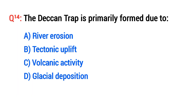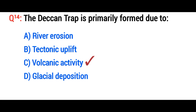Question number fourteen: The Deccan Trap was finally formed due to what? The right option is C: Volcanic activity.